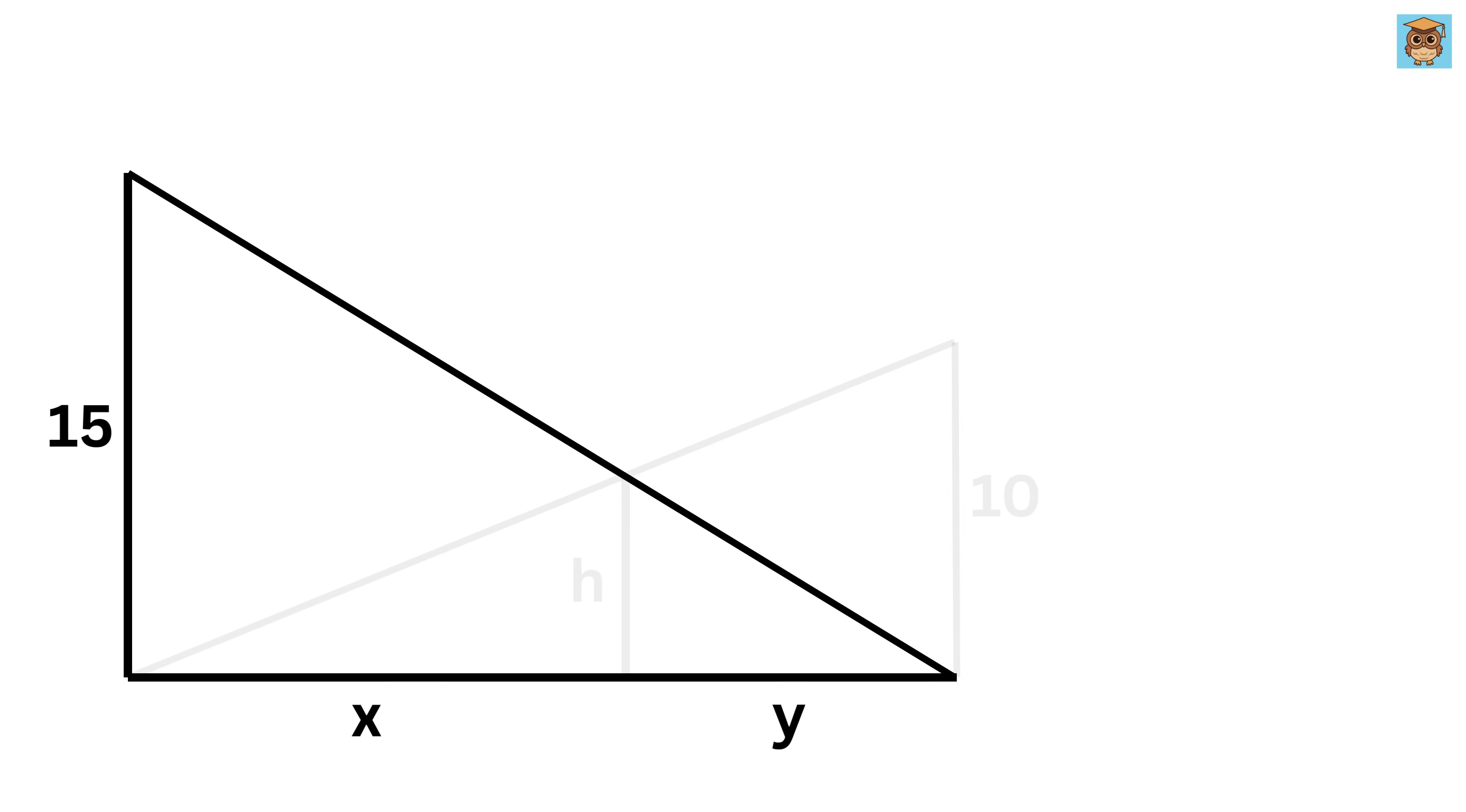Consider this bigger triangle and this smaller triangle. Both of them have the same angle, which is this angle, and both are right triangles. Therefore, both these triangles are similar to each other using angle similarity criterion.